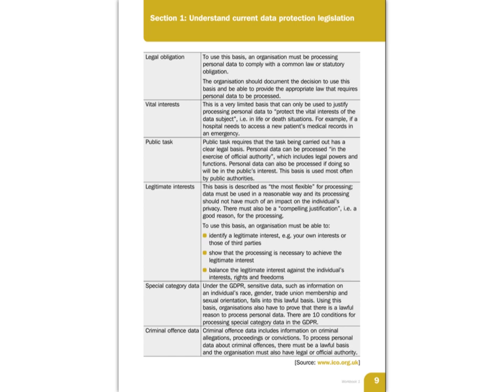Legitimate interests is described as the most flexible basis for processing. Data must be used in a reasonable way and its processing must not have much of an impact on an individual's privacy. This can apply if you're doing a study and can anonymise a lot of the data, using it as a legitimate business interest. A lot of the advertising law for personalised adverts in social media and Google comes under legitimate interests — you give consent through cookies, but you don't necessarily consent to Google using your stored personal data to give you personalised advertisements, yet that is a legitimate interest of that company.